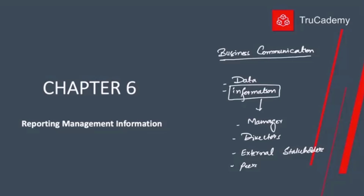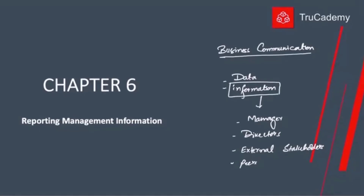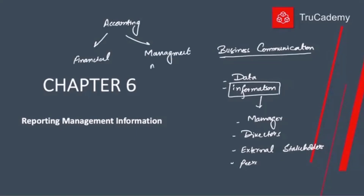Remember that we have two types of accounting: one is called financial accounting, and the second is called management or cost accounting. MA1 and MA2 basically deal with management accounting. When we want to communicate information to external stakeholders like bankers, suppliers, or government, we only communicate financial accounting information. When we report information to managers or directors for planning, controlling, or decision making, we mostly report management accounting, though sometimes some financial information may also be requested.